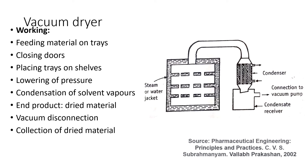Regarding the working, the material to be dried is placed inside the trays, which are placed on the shelves. The pressure is reduced up to 30 to 60 kilopascals using the vacuum pump, keeping the doors closed. Steam or hot air is then supplied into the blank space of the jacket and shelves.